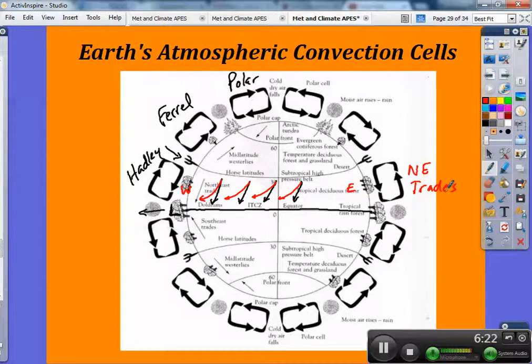They're the trade winds because these are the winds that Europeans caught to come from Europe over to the New World. Now, between 30 and 60 degrees north latitude, between here and here, notice the circulation is going from south to north. So winds are going this way. As winds go this way, we'll see that Coriolis is going to cause these winds to deflect to the right.